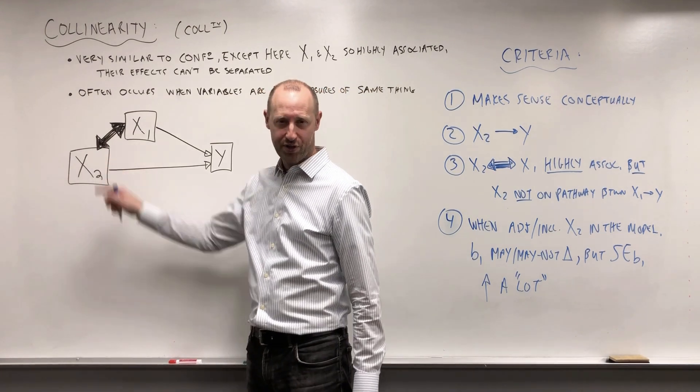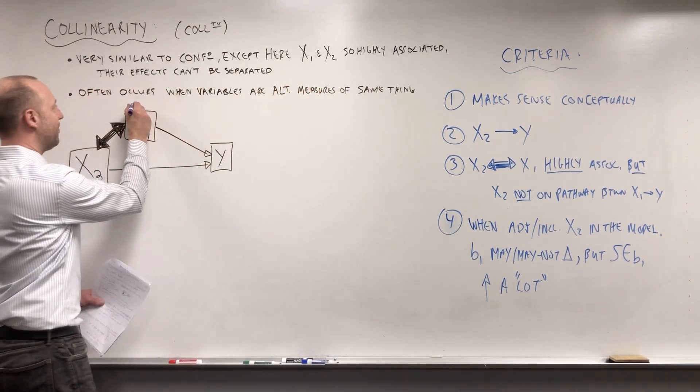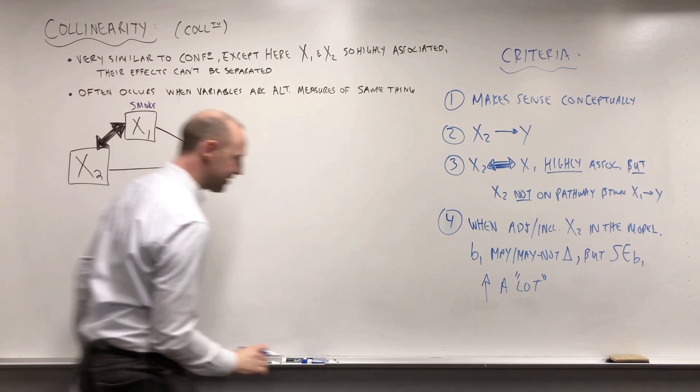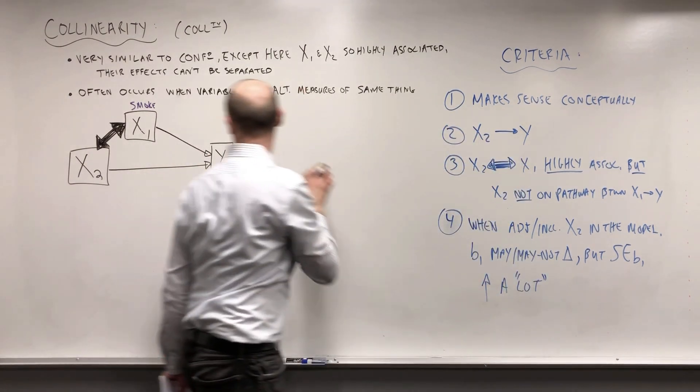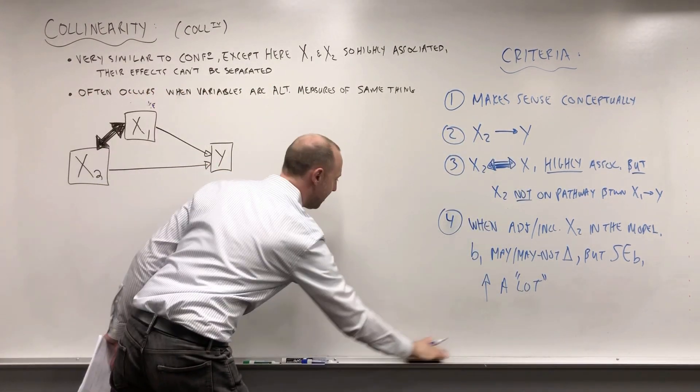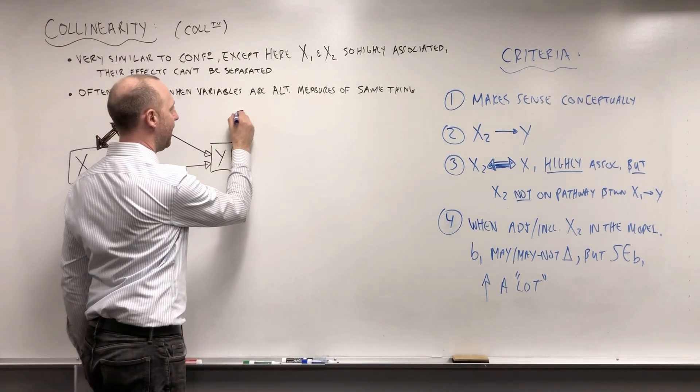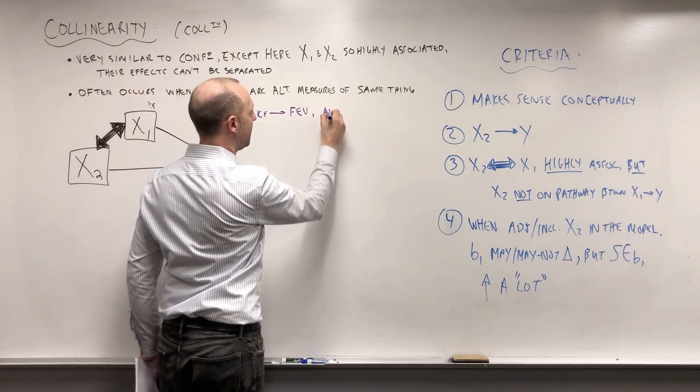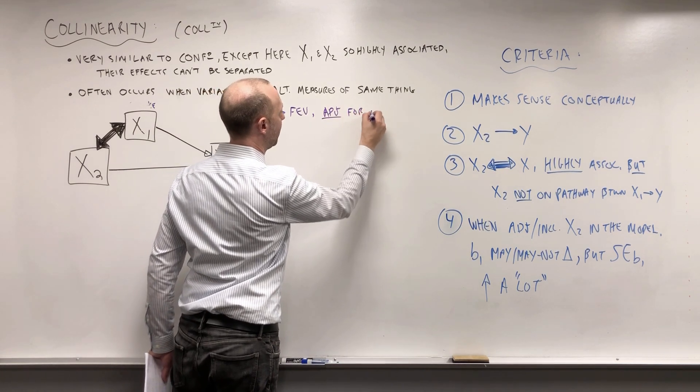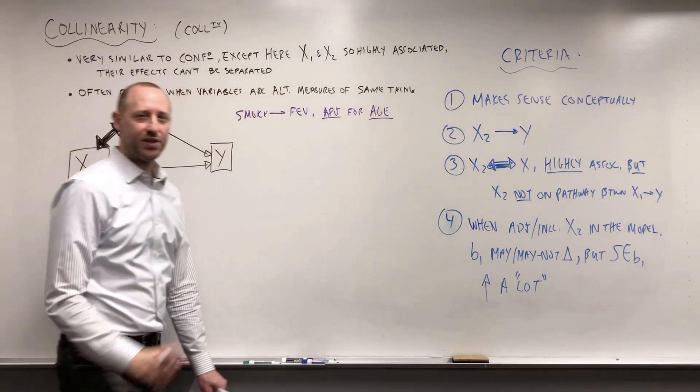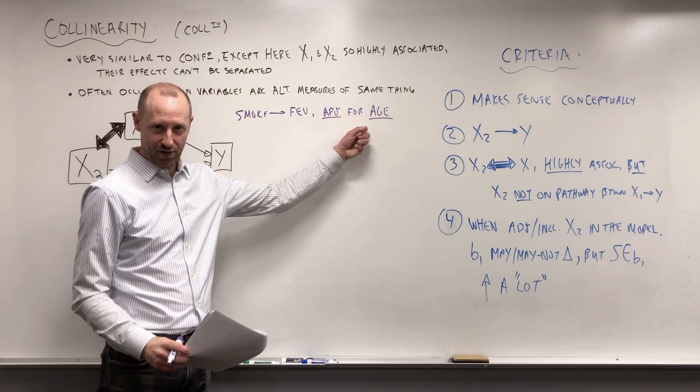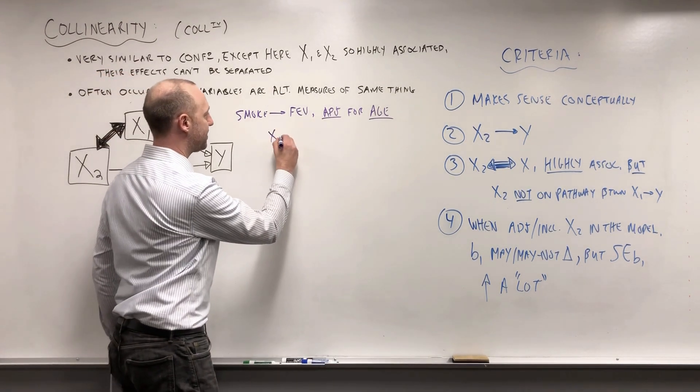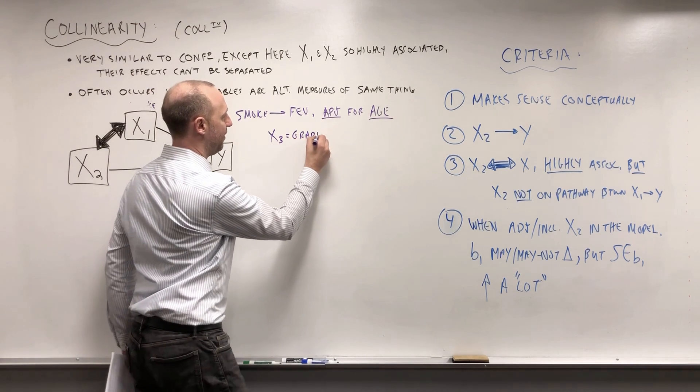If it's another potential variable to adjust for—we were looking at the effect of smoking on FEV—we said we're going to want to adjust for age. We've explored this and identified that age is a confounder, and we're going to want to adjust the smoking effect for age.